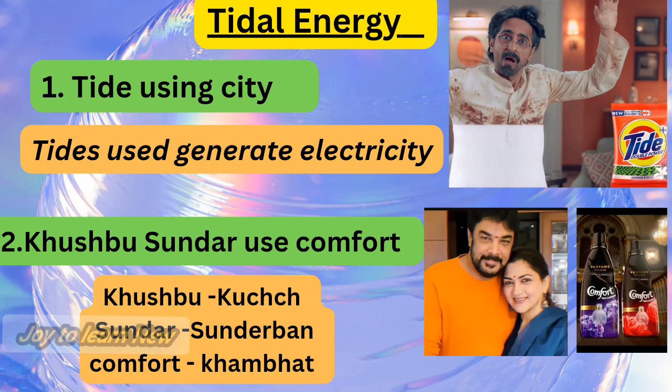Many of you are aware about tides. Tide — people use tide mostly in cities, so that is the first shortcut: tide used in cities. The second shortcut uses an image of Kushpo and Sundar, who are couples and actors. To relate: Kushpo and Sundar use Comfort. Tides are used to generate electricity — oceanic tides are used to generate electricity.